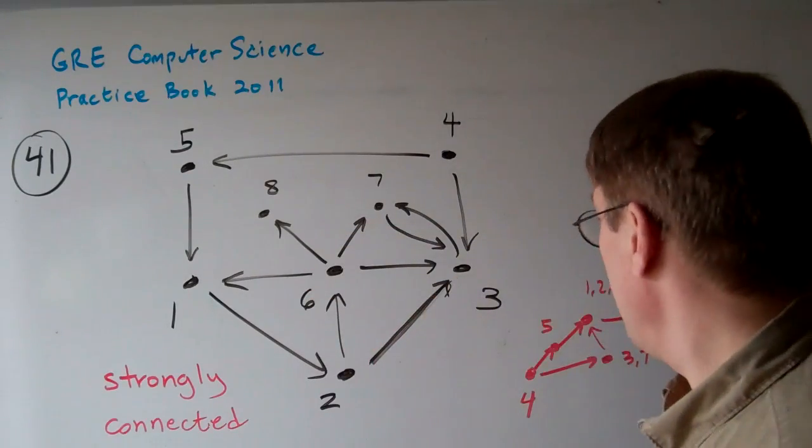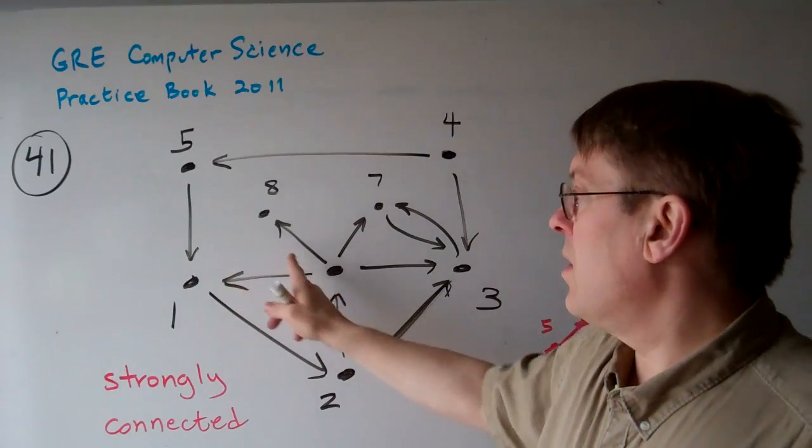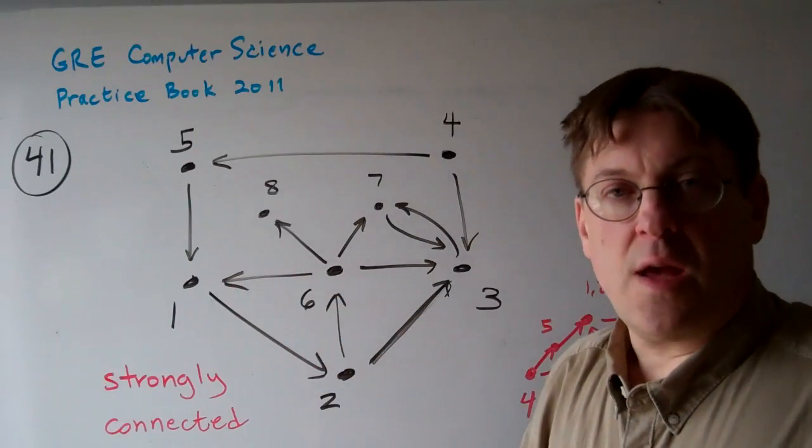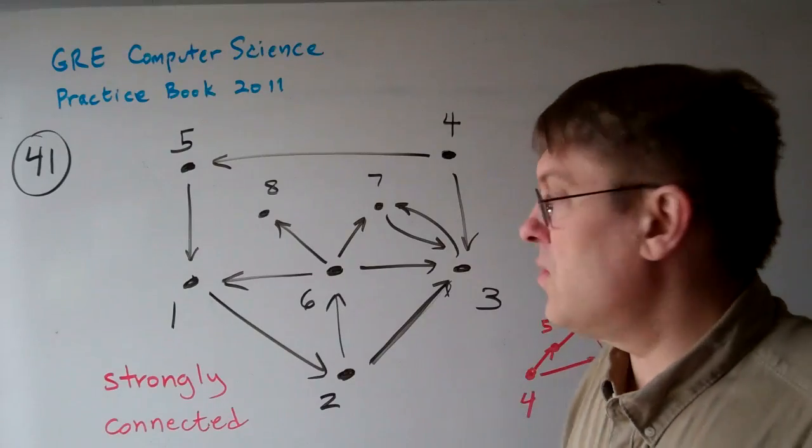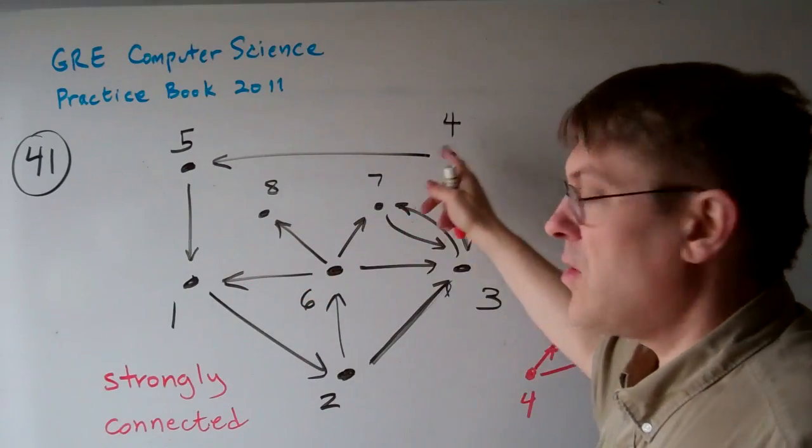Number 8, 8 can't reach anything. It can't go from itself to anywhere. So neither of these are strongly connected.